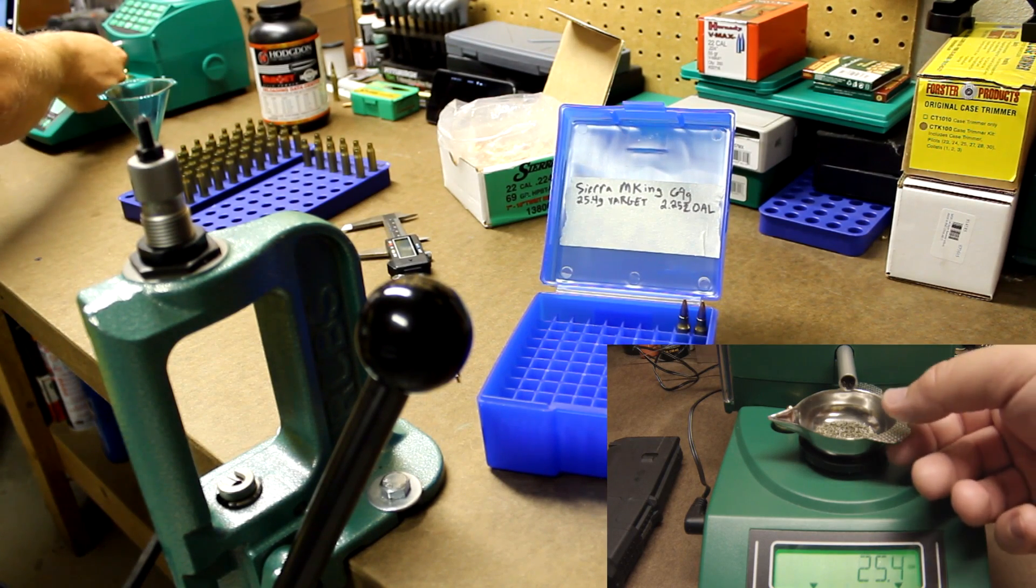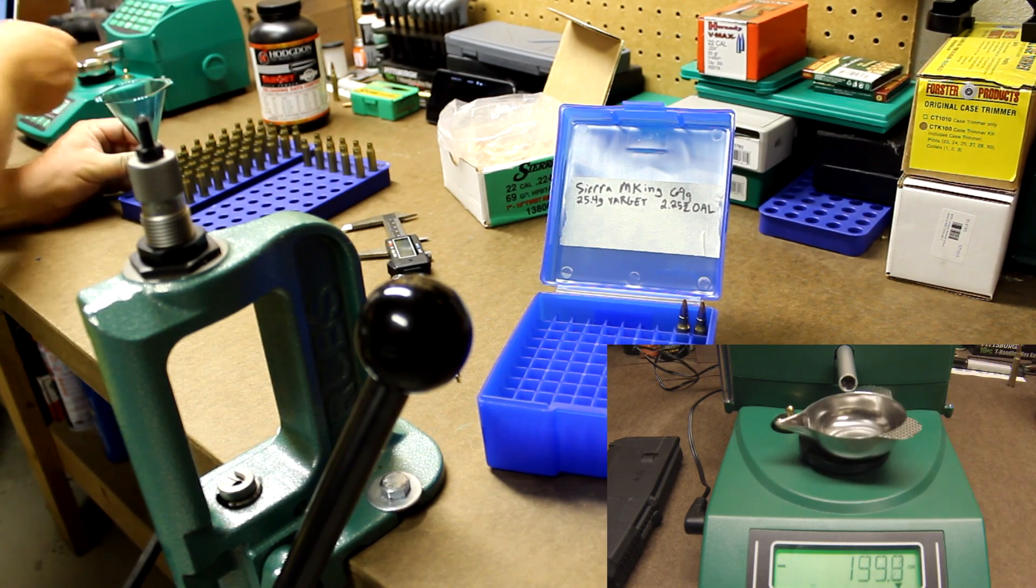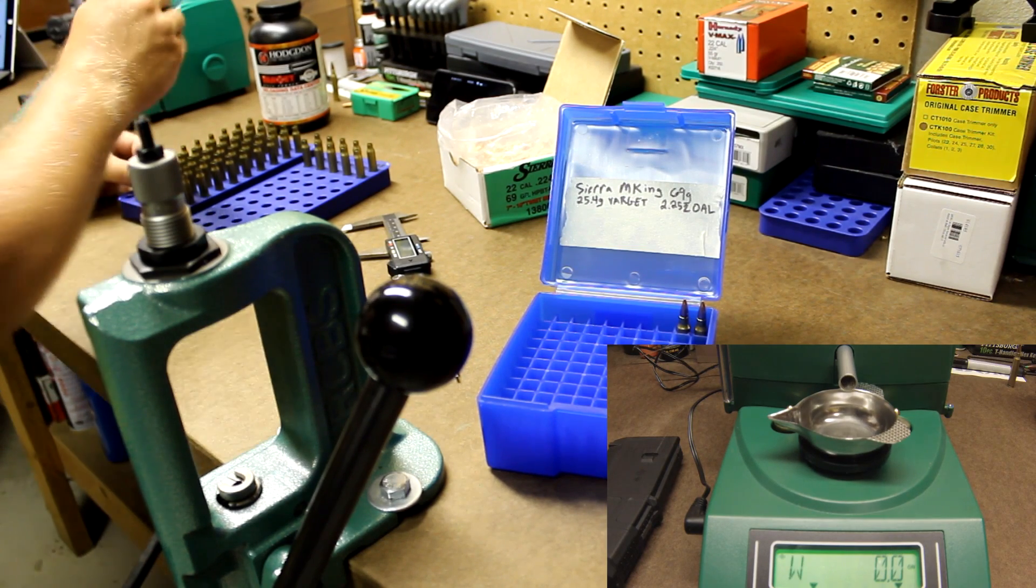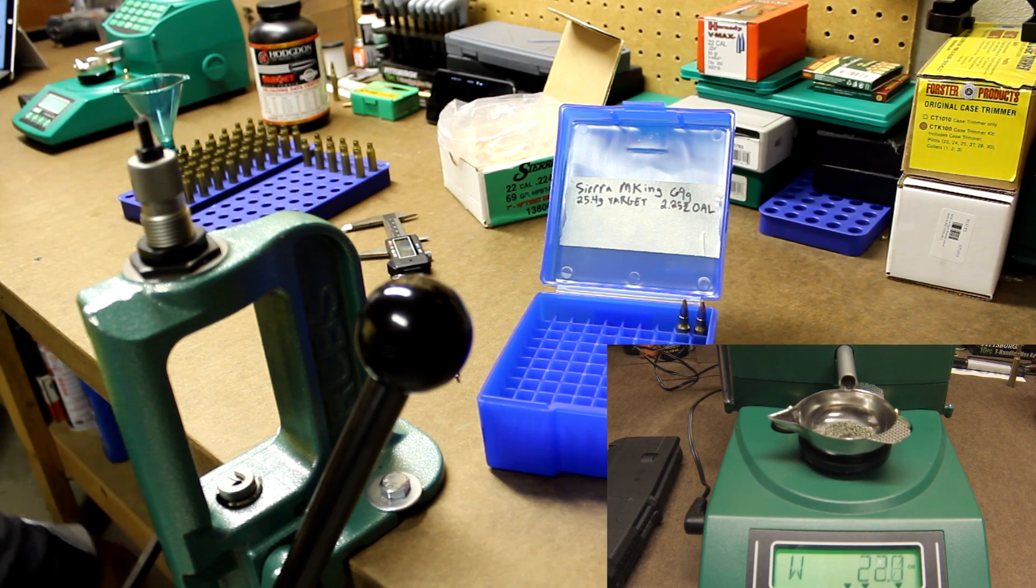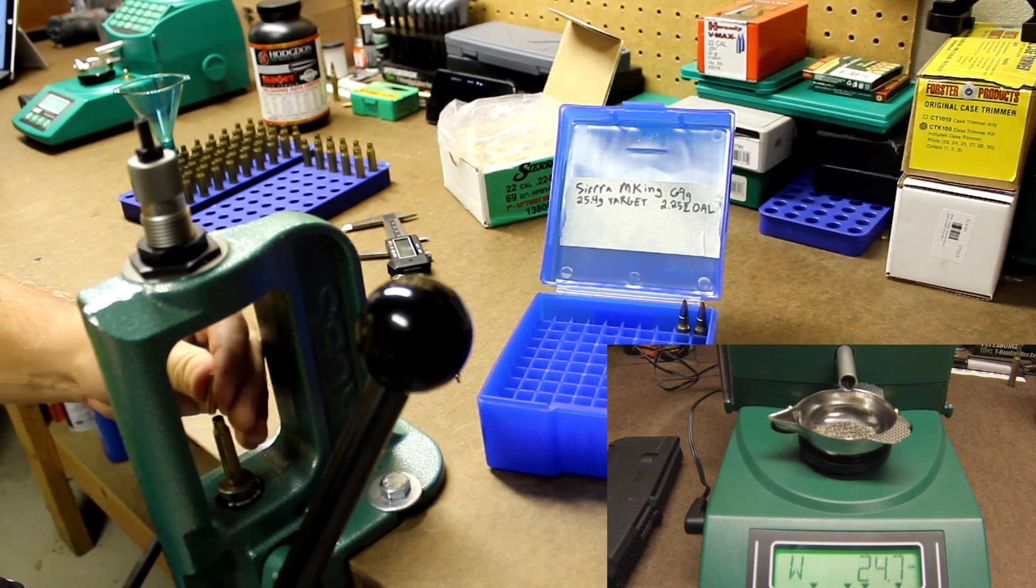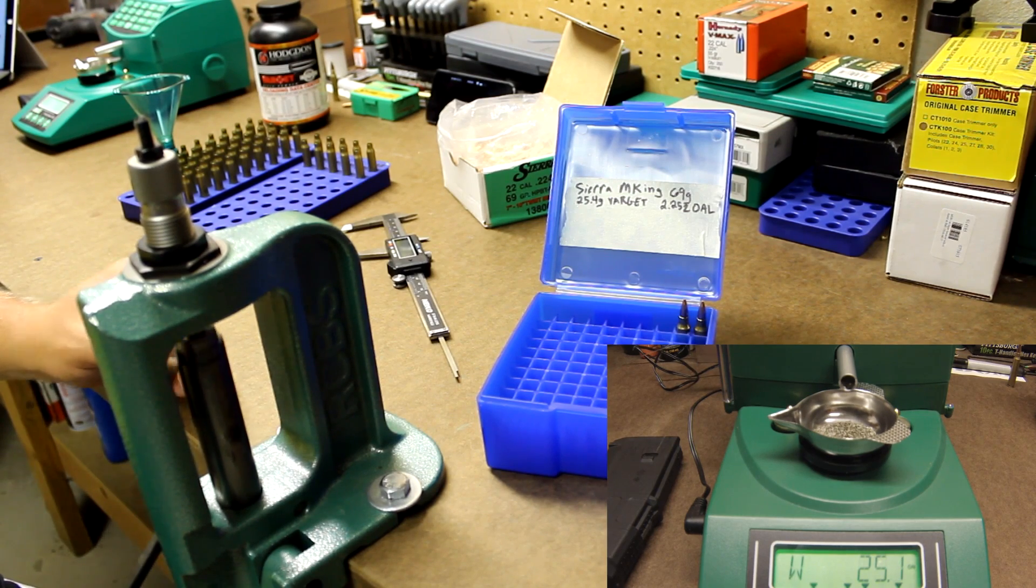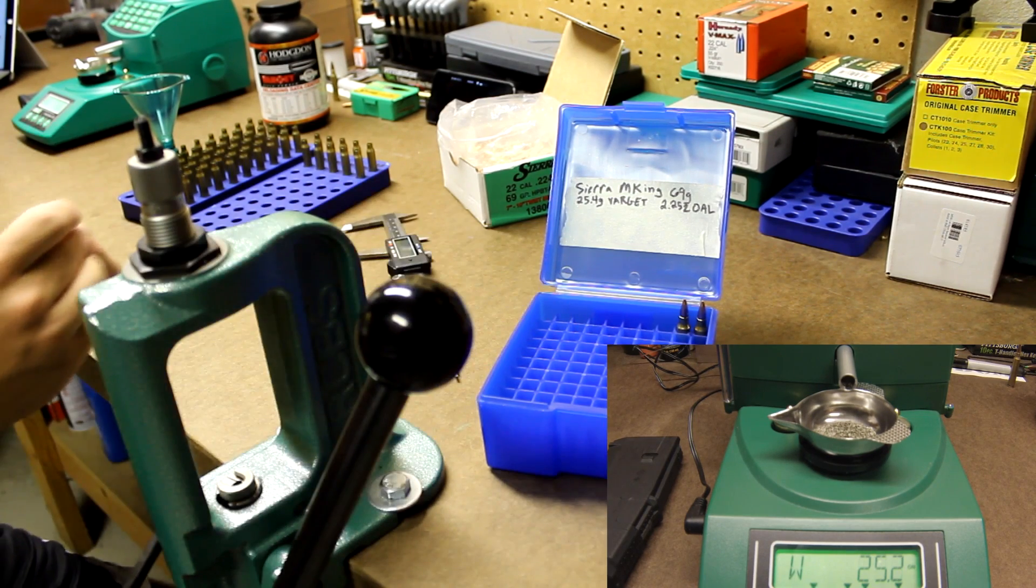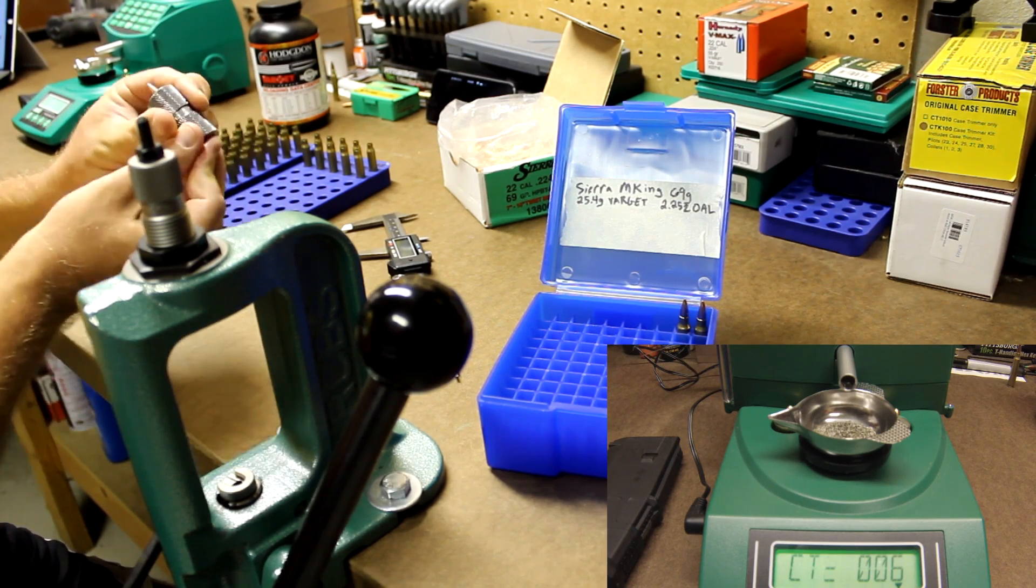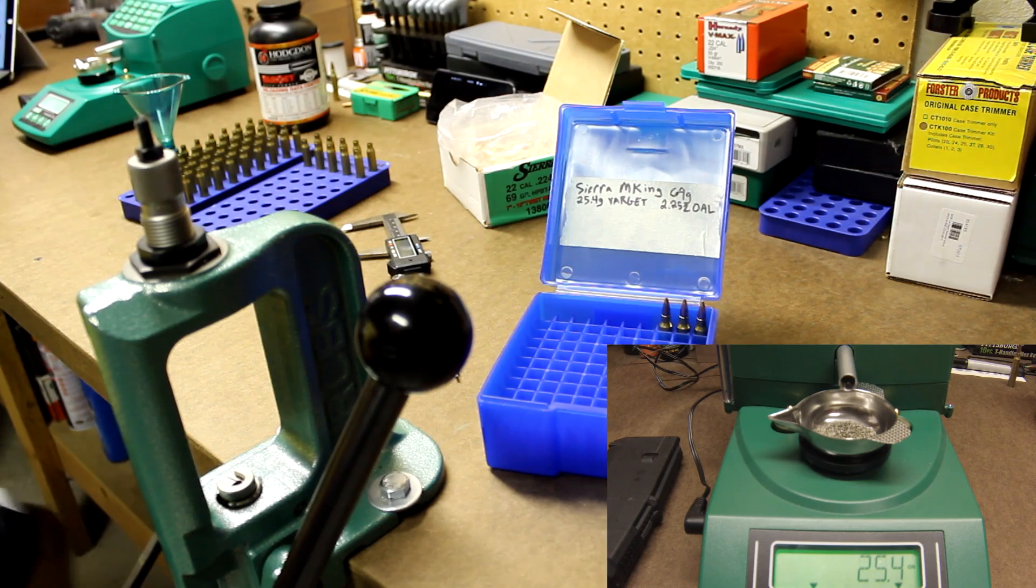Powder is dispensed at 25.4 grains. Go ahead and dump it in the next. I'm using 69 grain Sierra Match Kings. That looks good. There's a chamber. I'm not going to measure every one. I'm going to measure every tenth one.